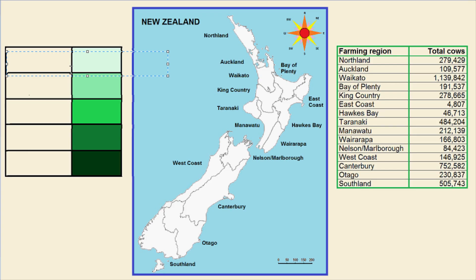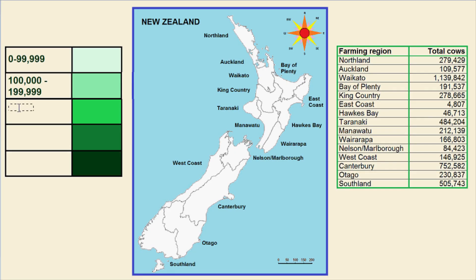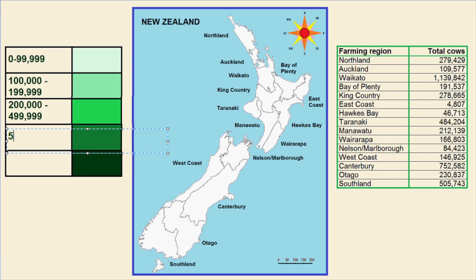I have already arbitrarily decided how I want to divide up my numbers. 0 to 99,999 is going to be the lowest category, paired with the lightest green. Then 100,000 to 199,999 with the next darkest shade. Followed by 200,000 to 499,999, then 400,000 to 999,999, and finally the 1,000,000 plus category which will have the darkest shade of green.